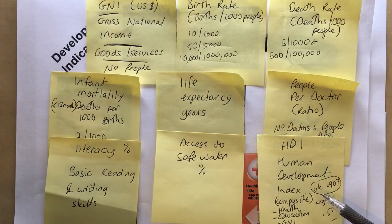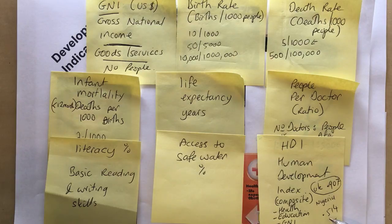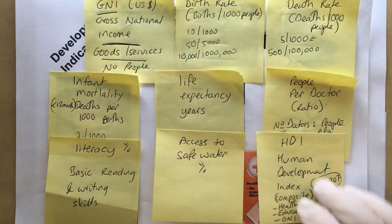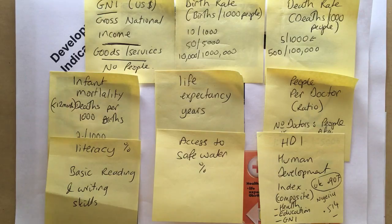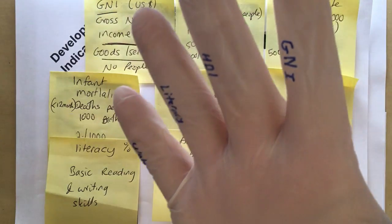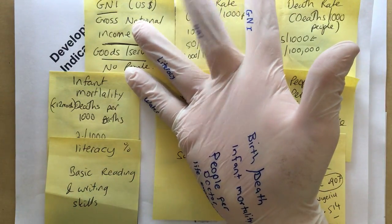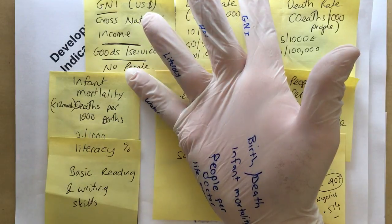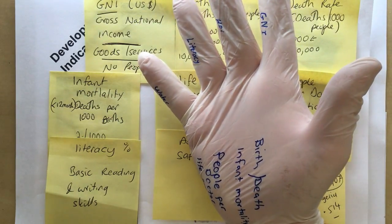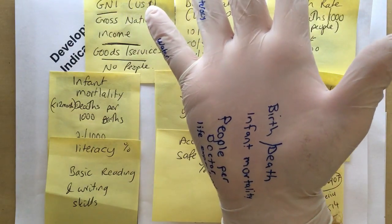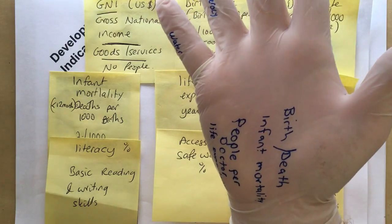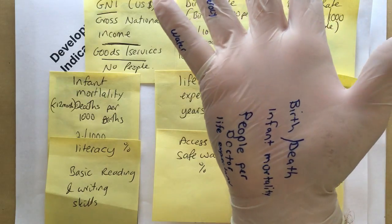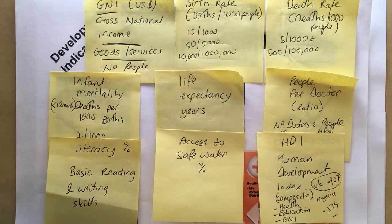For example, the UK has an HDI of 0.907 and Nigeria has an HDI of 0.514. In summary, development indicators help us show how well developed a country is. They include: Gross National Income (measured in dollars), HDI (a composite of healthcare, education, and GNI), literacy rate, access to safe water, birth rates, death rates, infant mortality rates, people per doctor, and life expectancy. Thank you for watching this White Glove Geography episode on development indicators.